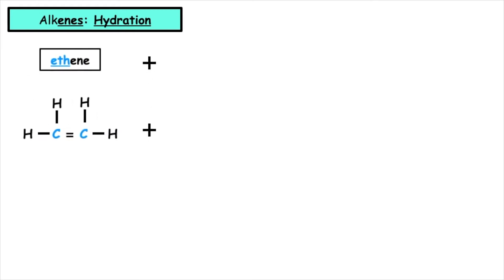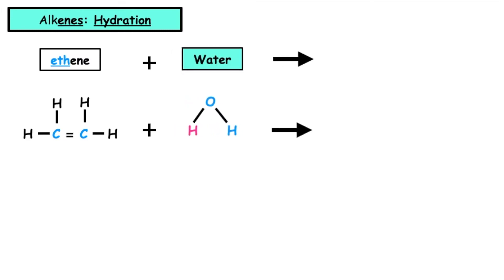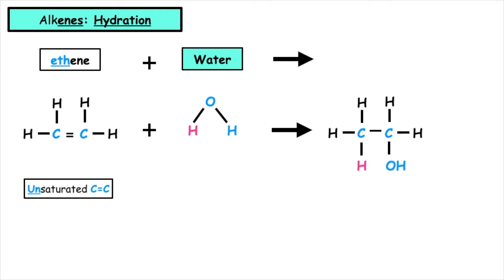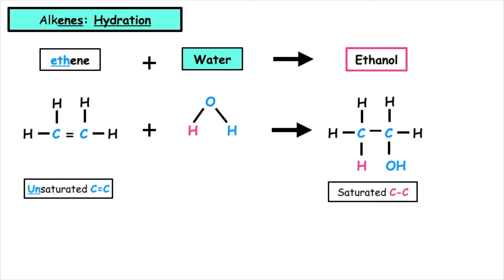We already know that alkenes can undergo addition reactions. A special type of addition reaction is known as hydration. So if we take ethene and we add on water, we will break the carbon-to-carbon double bond. A hydrogen would add to one carbon and the hydroxyl, the OH, will add to the other carbon. This means that this is now saturated, it has carbon-to-carbon single bonds, and this is our corresponding alcohol. The name of this alcohol is known as ethanol.